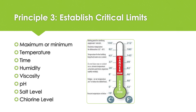Setting the critical limits is the third principle. In order to prevent, eradicate, or minimise the occurrence of a food safety hazard to an acceptable level, a biological, chemical, physical or allergenic characteristic must be regulated at a CCP to a maximum and/or minimum value known as our critical limit. For instance, setting a maximum or minimum limit for processing parameters that will control the hazard, such as temperature, time, humidity, viscosity, pH, salt level, chlorine level, etc. — this is the CCP's critical limit. Corrective action must be conducted and all impacted products must be managed if this limit is ever exceeded.